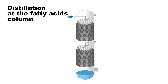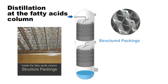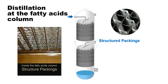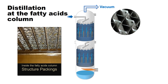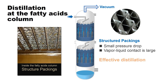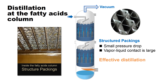Instead of sieve trays, the fatty acids column is installed with thin bent metal boards called structured packings, designed to facilitate smoother vapour-liquid contact. Reflux liquid flows down, creating thin layers on the surface of the structured packings while it continuously interacts with steam coming from the lower section, generating vapour-liquid contact. Structured packings boast a smaller pressure loss and broader vapour-liquid contact area than sieve trays or random packings, making them ideal for separation.